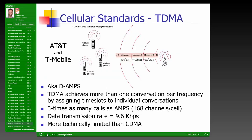TDMA (Time Division Multiple Access) is used primarily by AT&T and T-Mobile, also known as D-AMPS. It allows more than one conversation per frequency by assigning time slots — similar to time division multiplexing. TDMA supports three times as many calls as AMPS — about 168 channels per cell — with a data transmission rate of 9.6 kbps. It is more technically limited than CDMA.